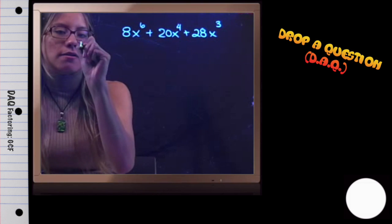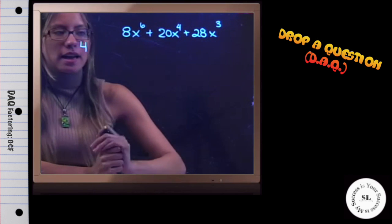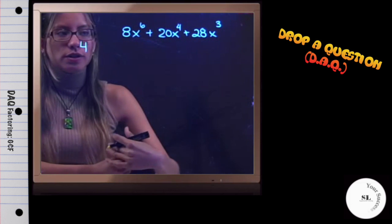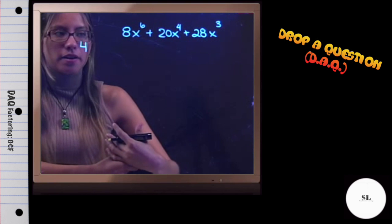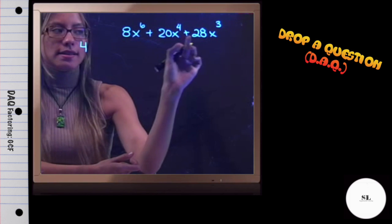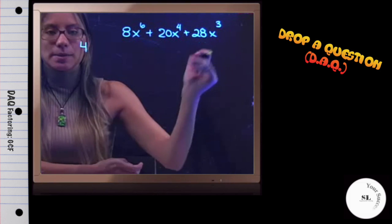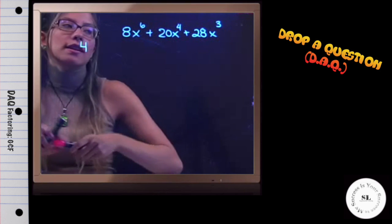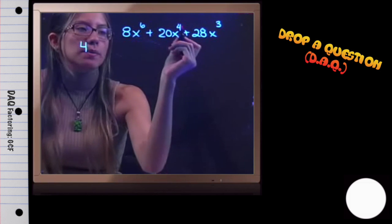If we take out a 4, that would be for our coefficients, but now we also need to look at the variables. Do they have a common variable? They all have x's, but they also all have exponents. The easiest way to do this is to check what the lowest exponent is.